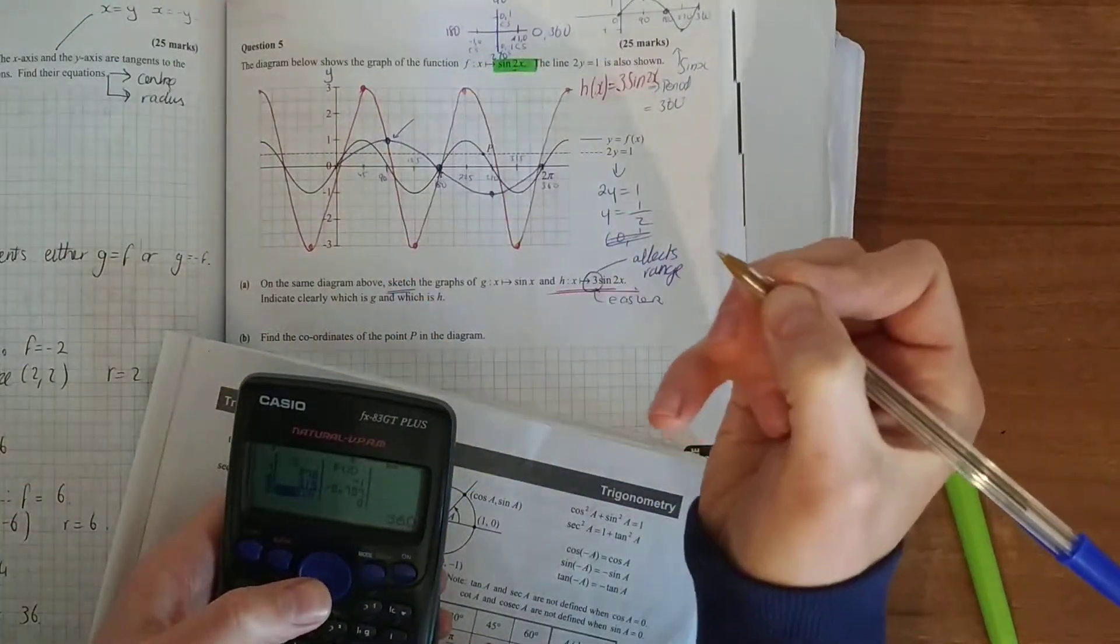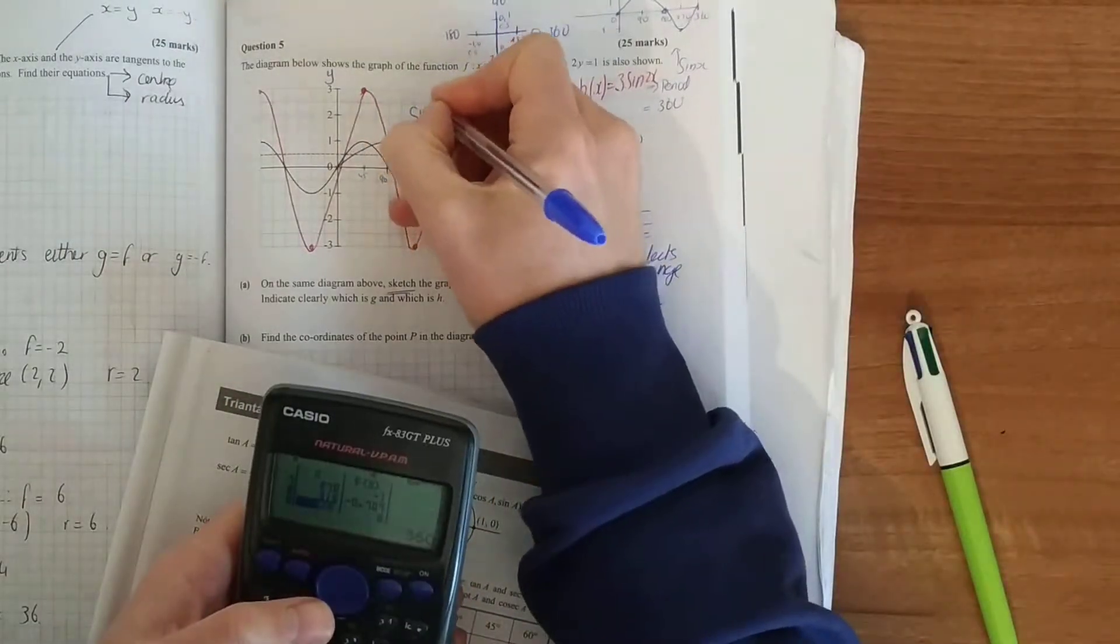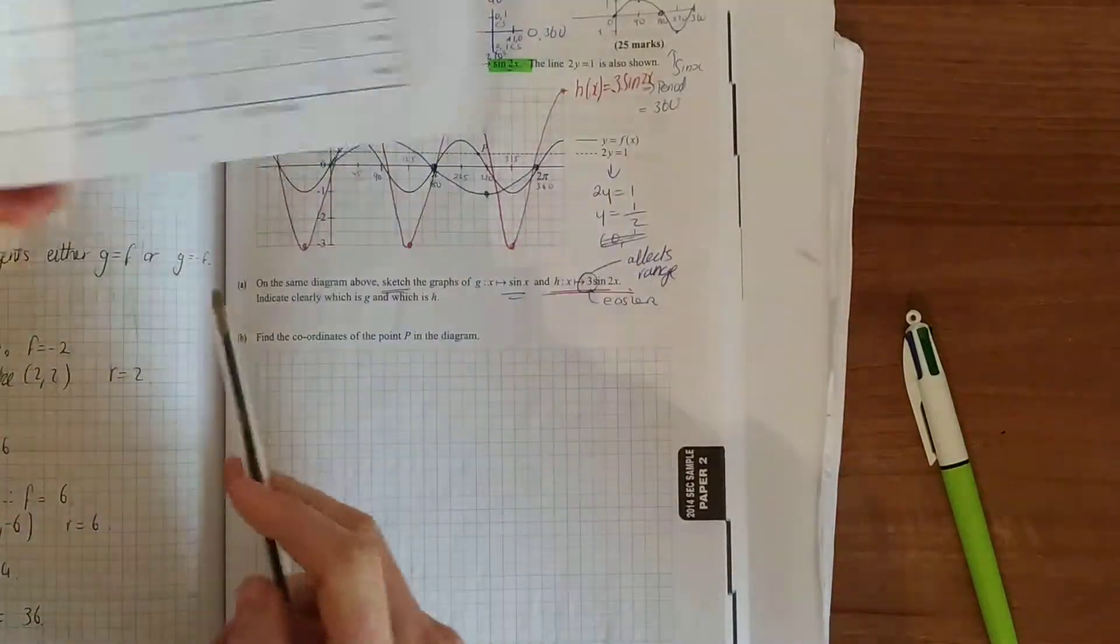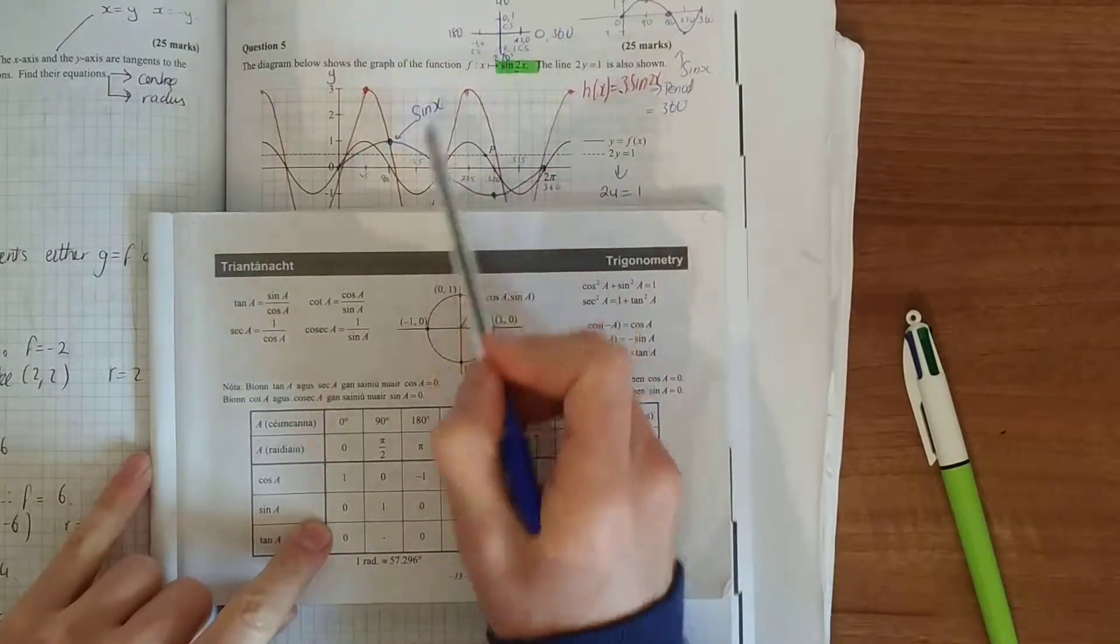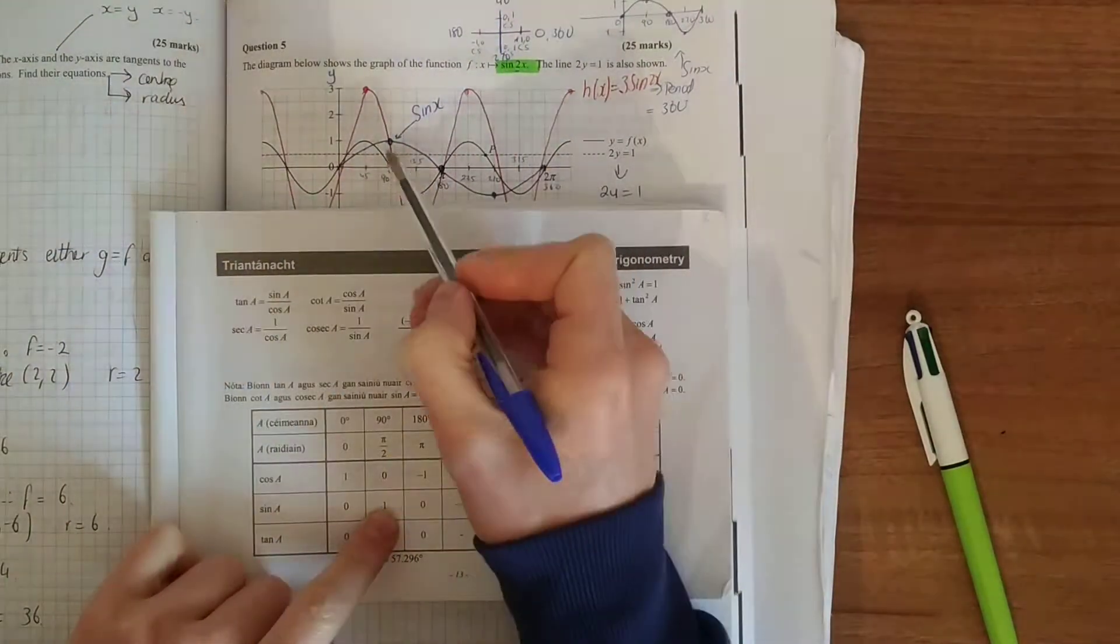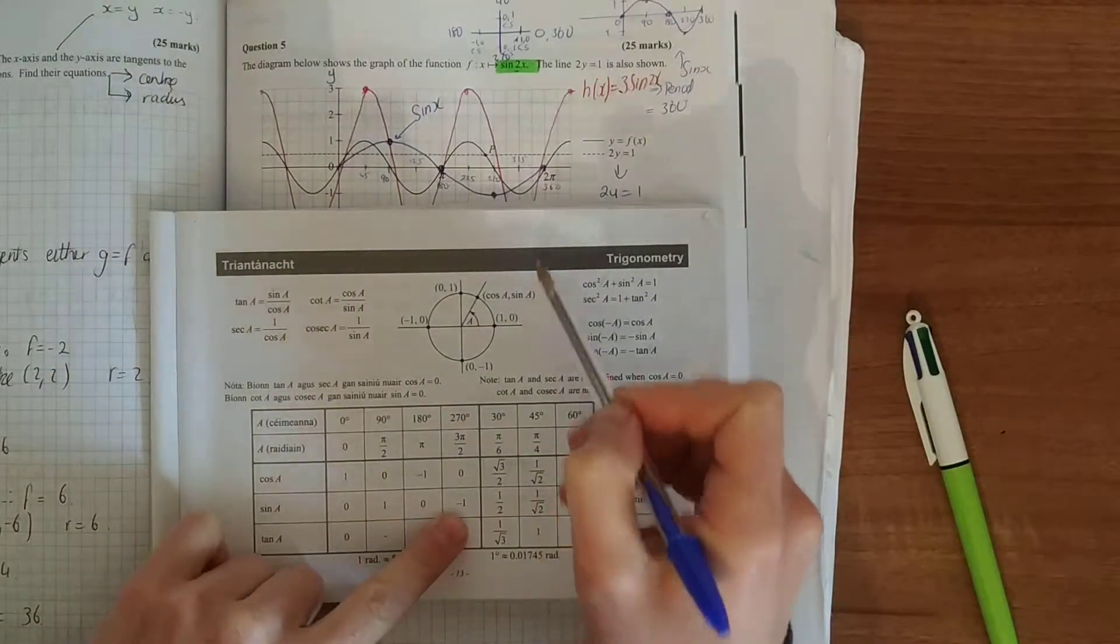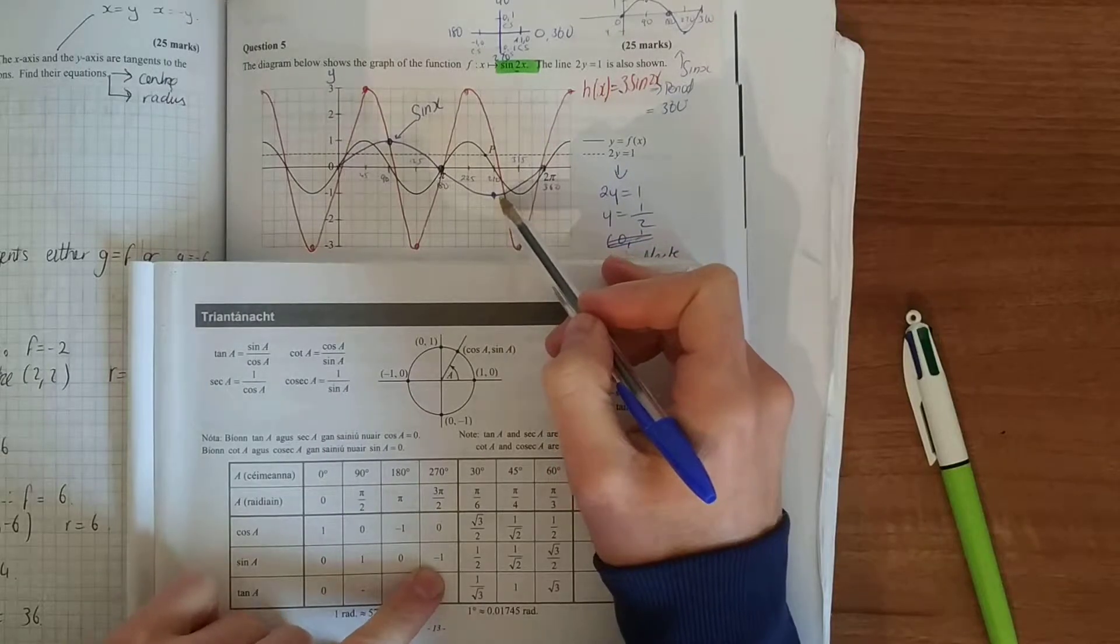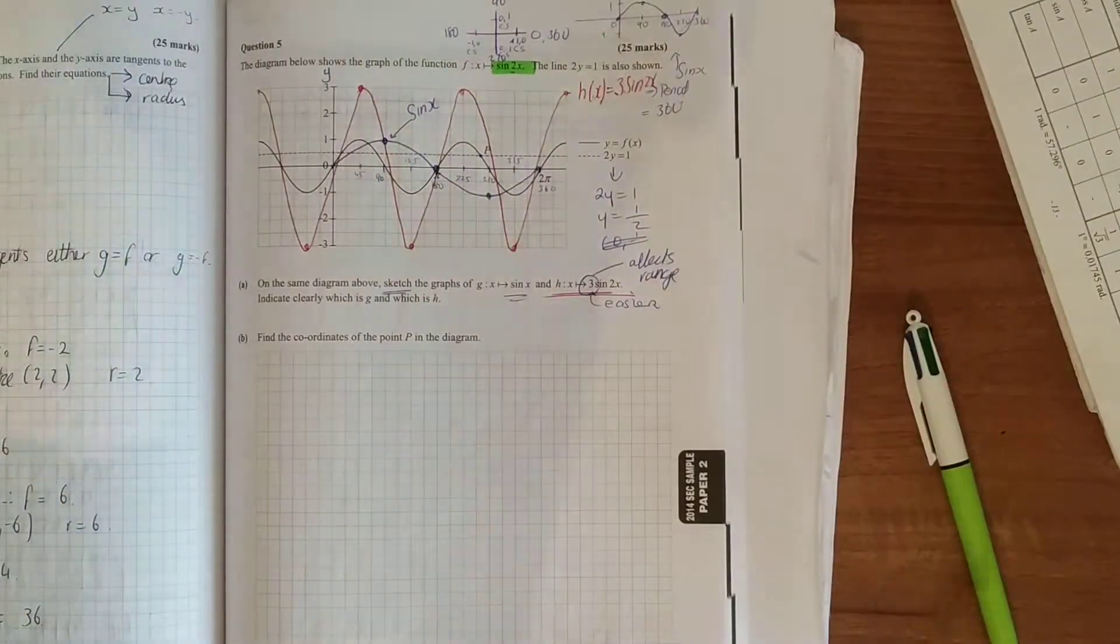That blue line there is your sine of x. Another way you can do it is simply use your tables. Sine of 0 is 0, it all links to your unit circle. Sine of 90 is 1, sine 180 is 0, sine of 270 is minus 1, and sine of 360 is back to 0.